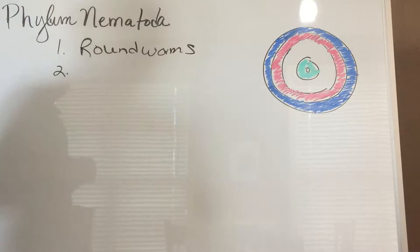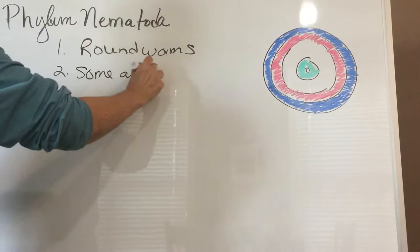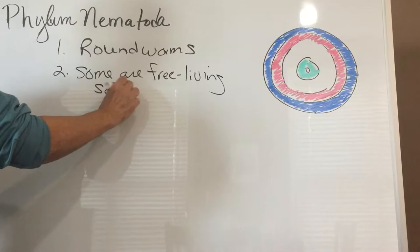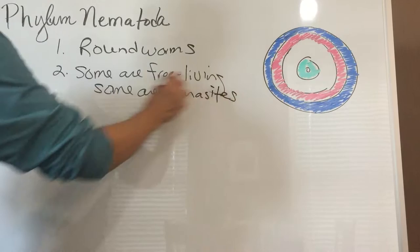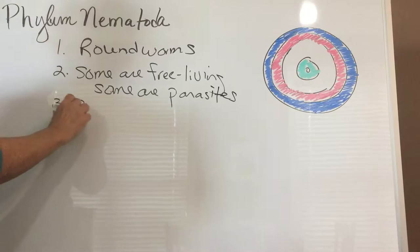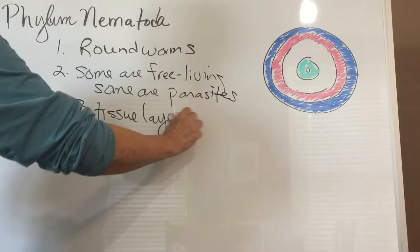They were also worm-shaped but they were flattened. These are worm-shaped but have a round cross-section. Some of these are free-living, some are parasitic. This group has three tissue layers and we see an advancement here.